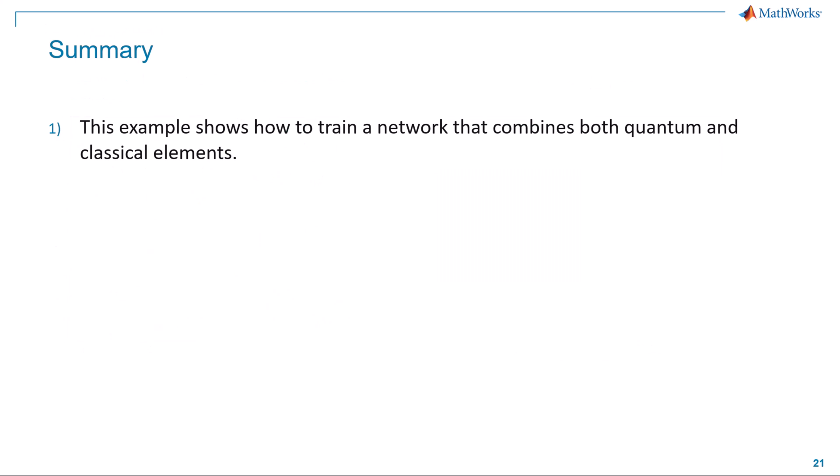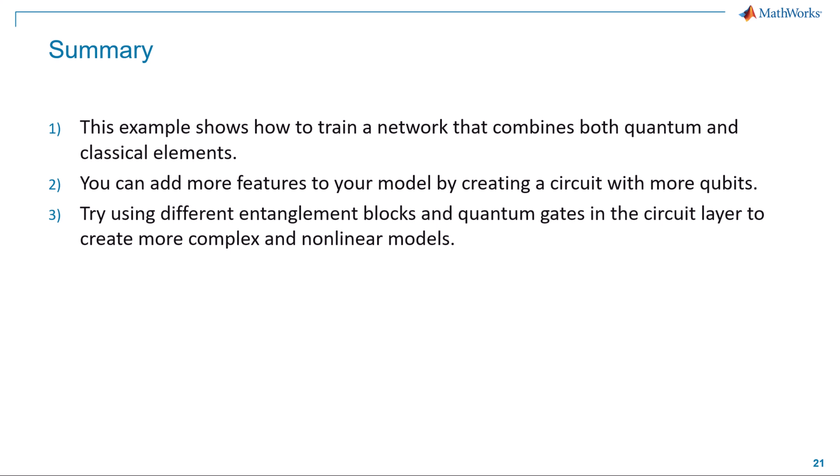In this demonstration, we have demonstrated how to train a network that integrates both quantum and classical elements. This approach allows us to enhance our models effectively. To scale your model, create circuits with additional qubits to incorporate more features. Experiment with various entanglement blocks and quantum gates within the circuit layer to develop more complex and non-linear models. Finally, measure the output of the quantum network based on the specific problem you are addressing.